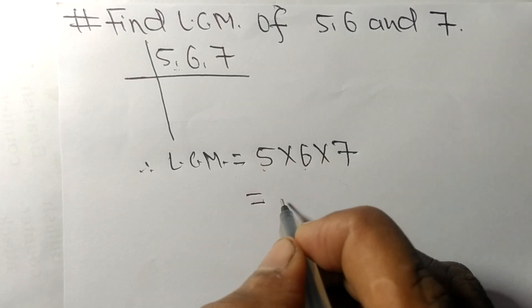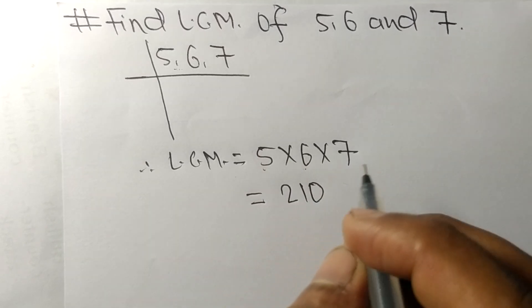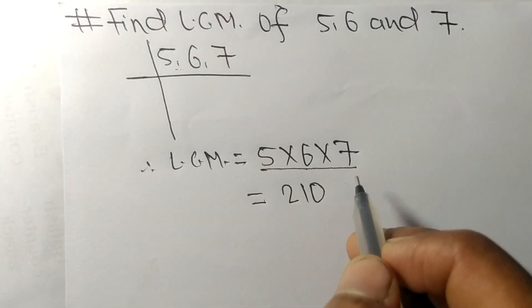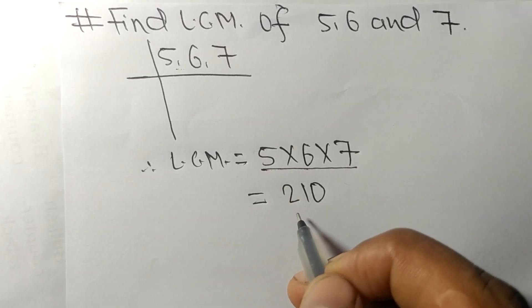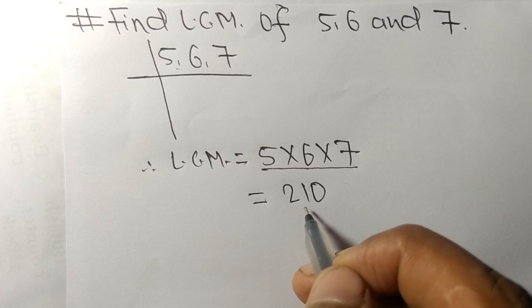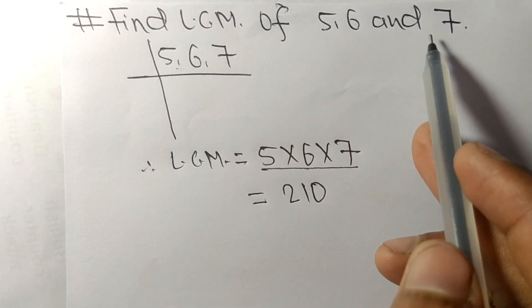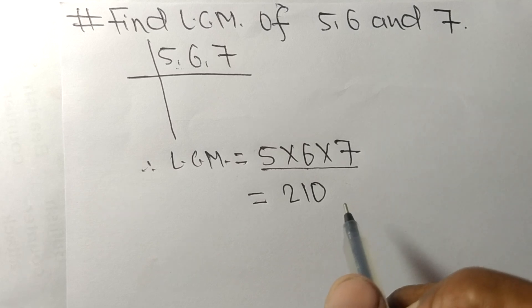30 times 7 means 210. So by multiplying all these numbers we got 210. So 210 is the LCM of 5, 6, and 7. This much for today and thanks for watching.